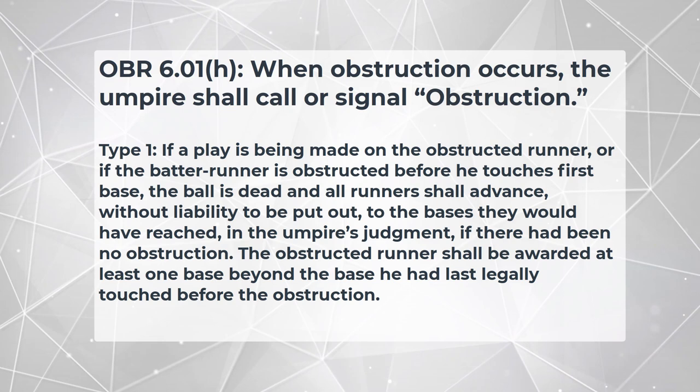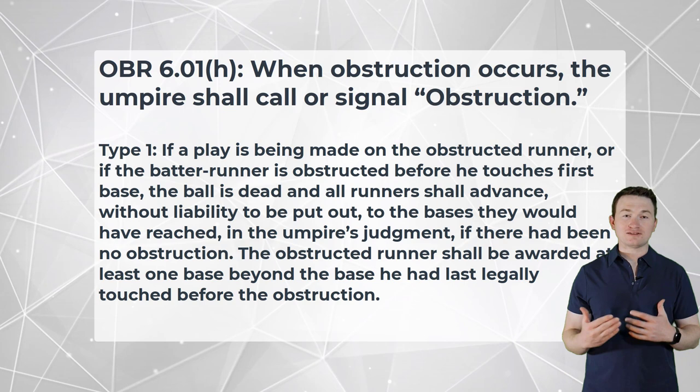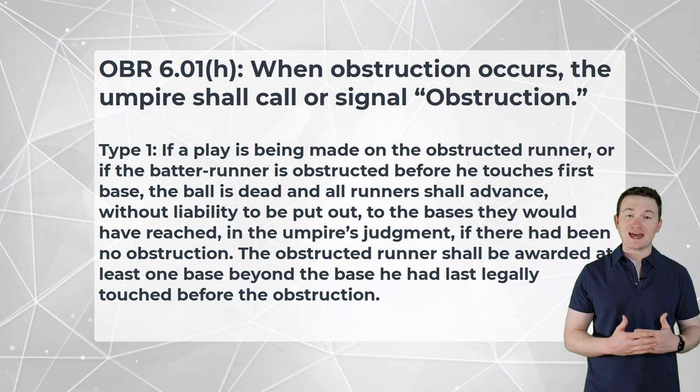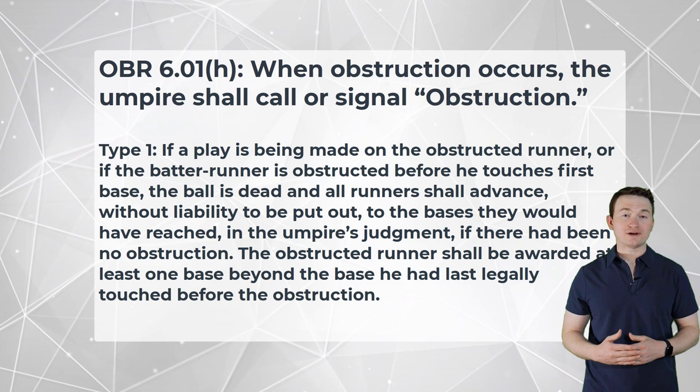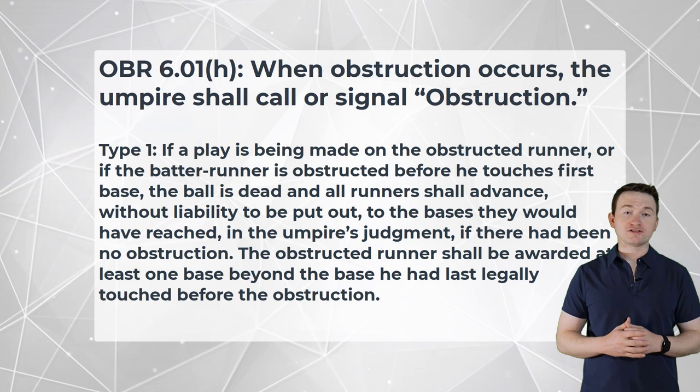Let's break this down. Type 1 obstruction occurs when there is a play actively being made on the runner that is obstructed — this is most likely to happen during a situation like a rundown. We should also note that this rule says the ball is immediately dead, which is different from the NFHS rule that says obstruction is always a delayed dead ball. When enforcing Type 1 obstruction, we give the runner that was obstructed the next base, and all other runners are placed where the umpires think they would have achieved had the obstruction not occurred.